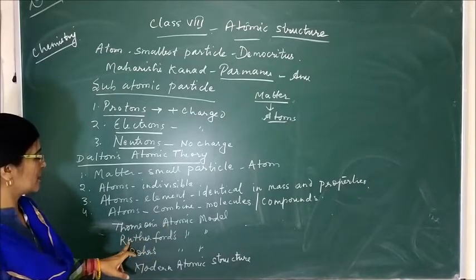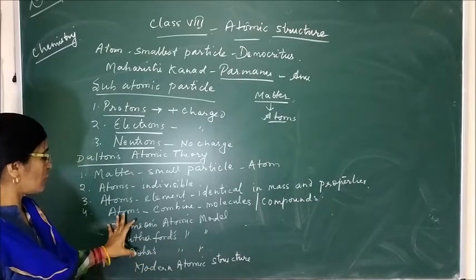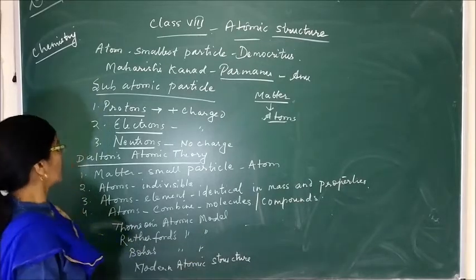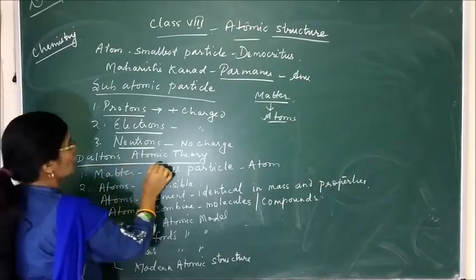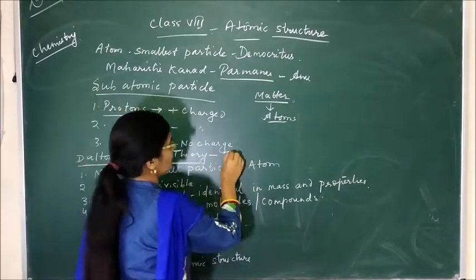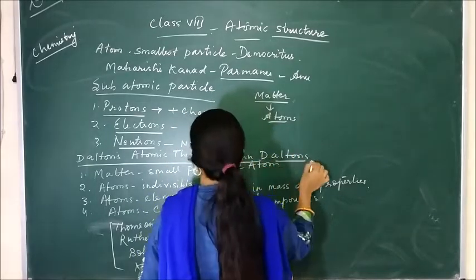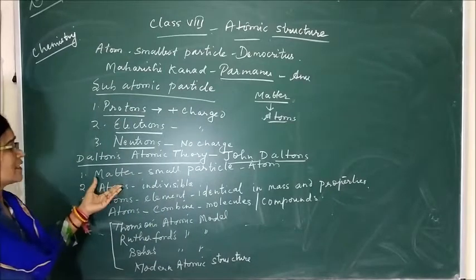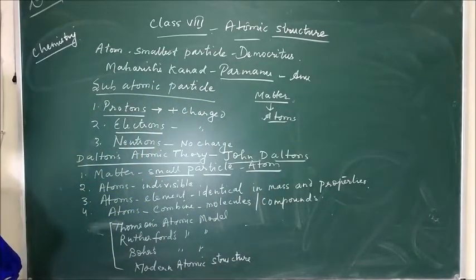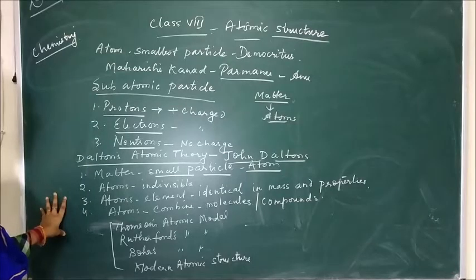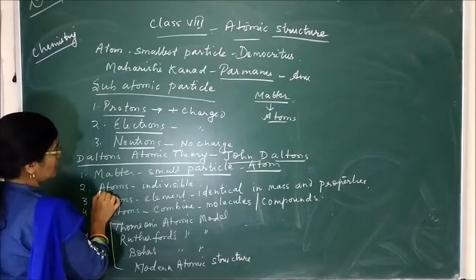There is Thomson's atomic model, Rutherford's atomic model, Bohr's atomic model, and the conclusion of all three — the modern atomic structure. Before studying these different models, I will tell you about Dalton's atomic theory. John Dalton was a scientist who described a few features of atoms in his theory. He described that all matter is made up of very small particles called atoms, as also described by Maharshi Kannad and by Democritus.